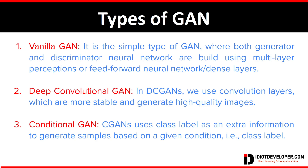In DCGAN, we use the concept of GAN with convolution-based normalization, ReLU activation functions, and transpose convolutional layers. It is much more stable and easier to train as it uses convolutional layers with shared weights, so they are lighter in terms of number of parameters compared to Vanilla GAN.